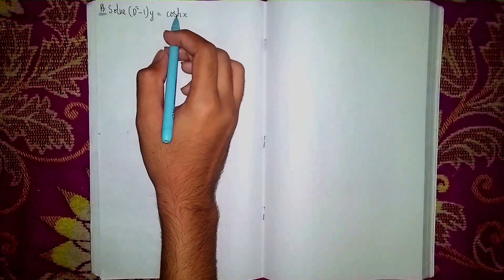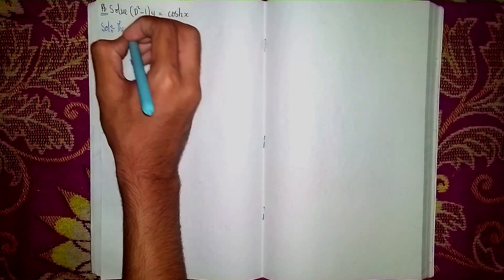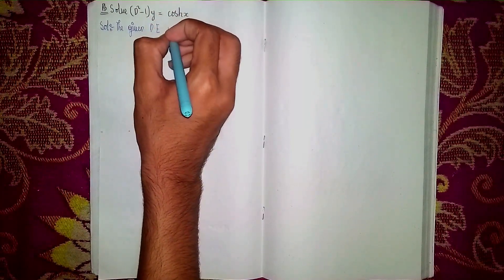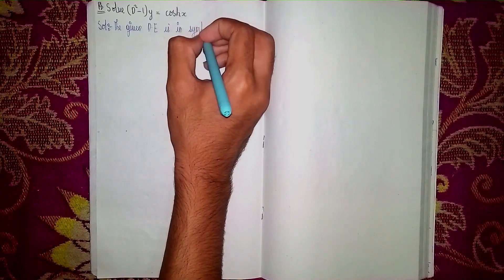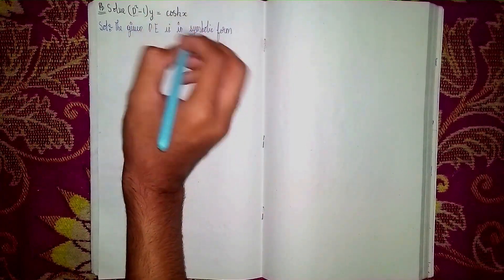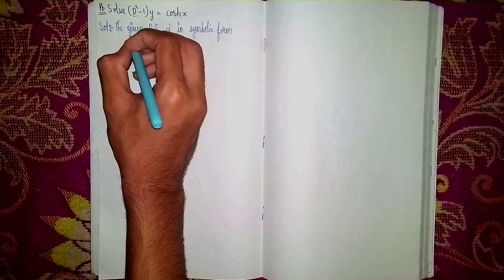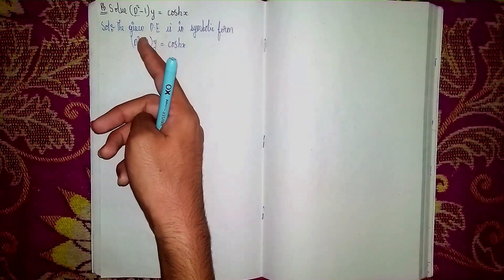Hello students and welcome back to my channel. Today we solve the differential equation (D² - 1)y = cosh(x). This is a non-homogeneous linear differential equation. We write the given differential equation in symbolic form as D² minus 1 into y is equal to cosh(x). There are three steps to solve this equation.